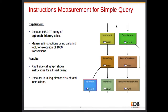So first I'll start with instruction measurement. I use the callgrind tool and cachegrind for drawing the graphical instruction view. I have done this for a couple of queries like the pgbench insert query and the pgbench TPCB update query. For the insert query I ran almost 1,000 transactions. What I want to mention is that the executor part — executor start and executor run — is taking almost 28% of the instructions of one query execution in total flow.